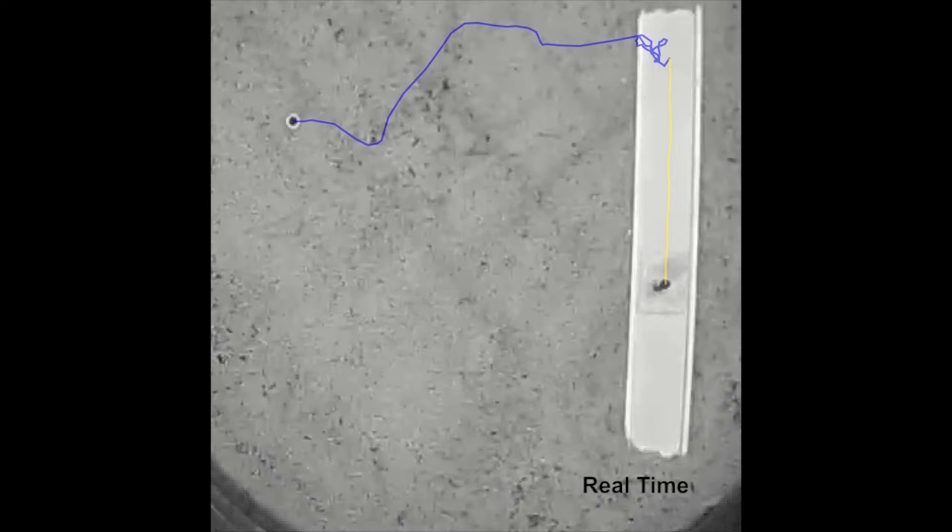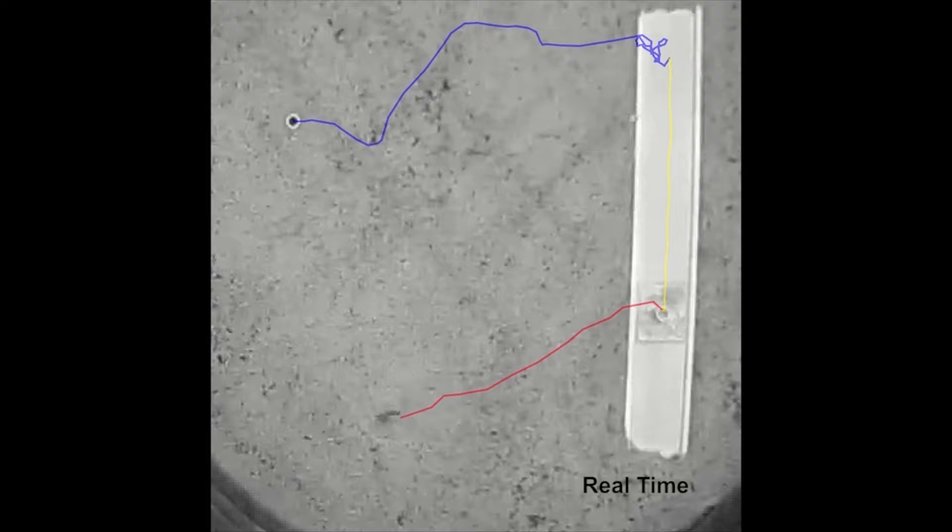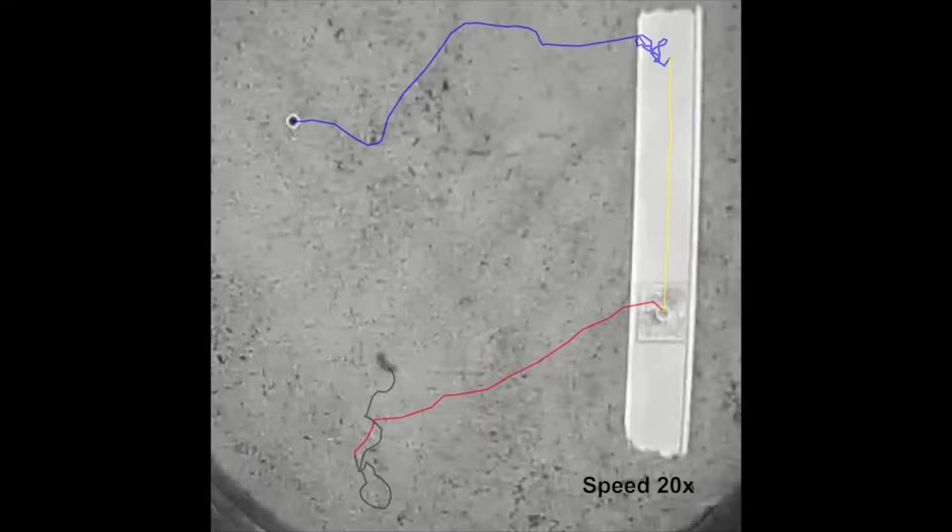During our experiments, we found that mantis shrimp did indeed orient their homeward paths as expected by navigation using path integration, demonstrating that mantis shrimp used path integration to navigate to their home burrows.